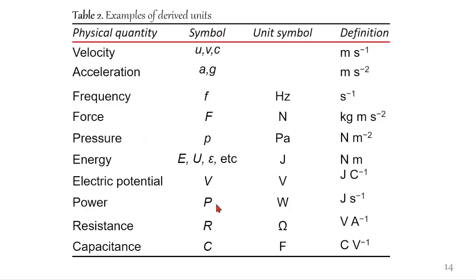These are the various symbols. The first two, velocity and acceleration, don't have unit symbols. But the rest do, all through to capacitance. Their definitions are also included here. Velocity: meter per second. Acceleration: meter per second squared. Frequency: per second. Force: kilogram meter per second squared, all through to capacitance which is coulomb per volt.